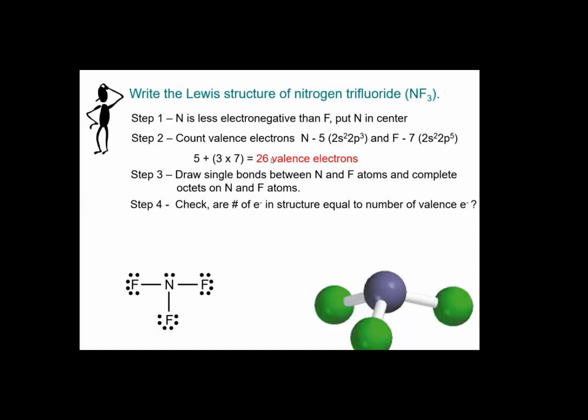Let's count. Number of electrons in the structure. Is it equal to total number of valence electrons which was brought in by all four atoms? Yes? I have got three covalent bonds, each covalent bond, two electrons.